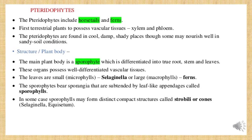Pteridophytes live in cool and damp places. The main plant body is a sporophyte — it is a diploid organism, a plant which bears the spores, and it is differentiated into roots, stem, and leaves. Some leaves are small and are called microphylls, for example Selaginella. Some leaves are also large, also referred to as megaphylls, for example ferns.